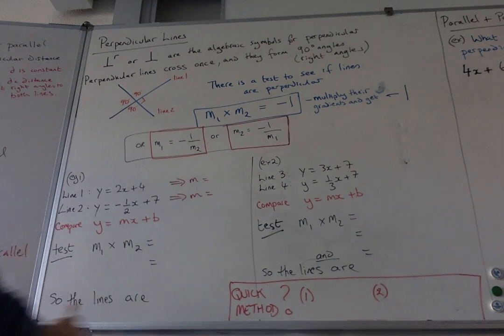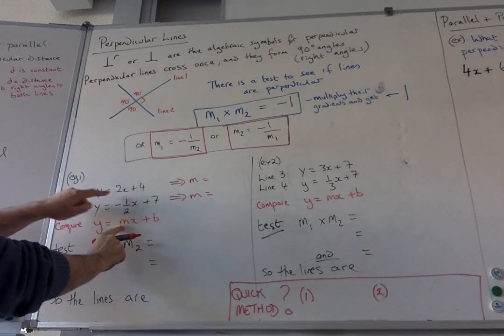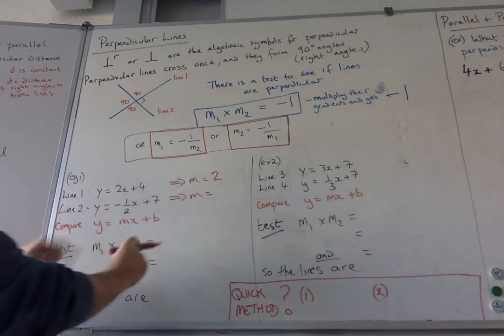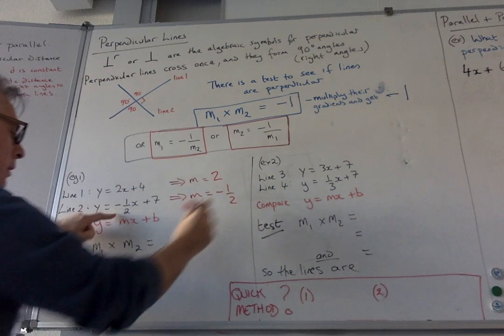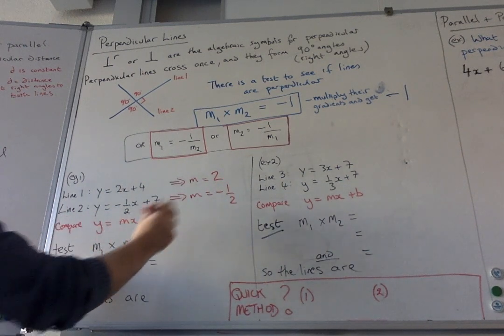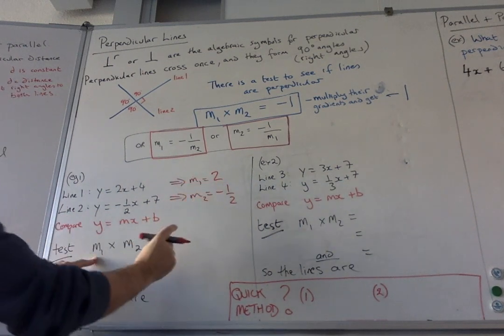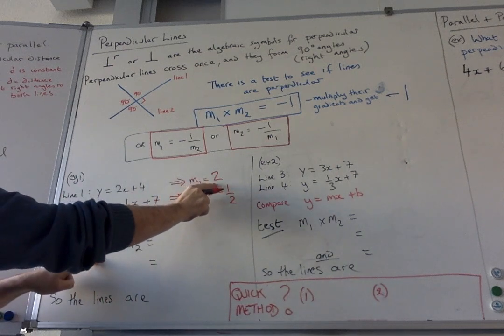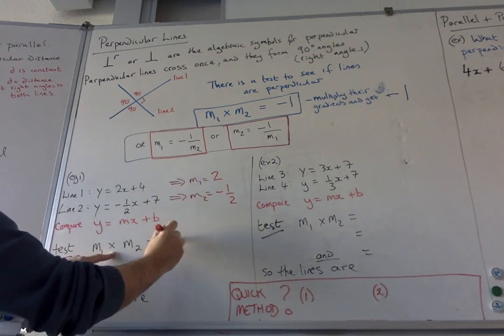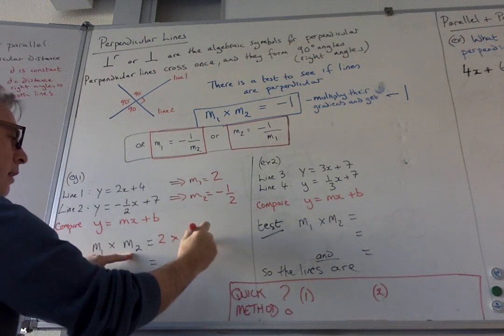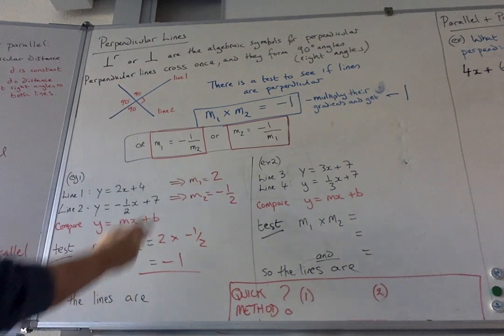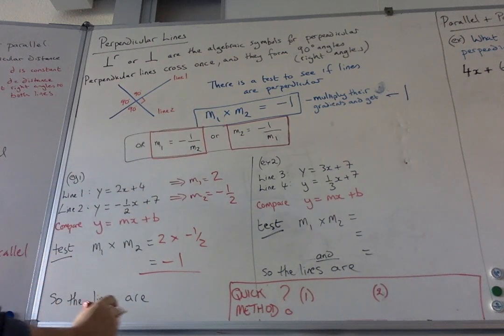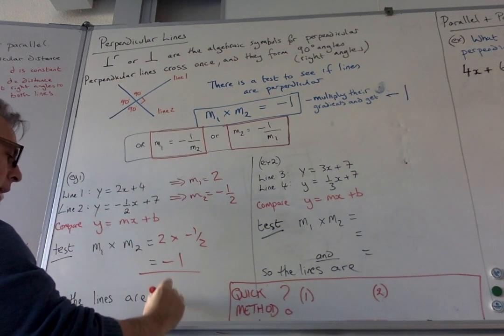Okay, so you're back. So on this one, you should have seen that m was 2. Here we're comparing again, m is minus a half. If I start this calculation, we have m1 and m2 with line 1, line 2. m1 is 2 times m2 is minus a half. Positive negative, negative. 2 times a half, minus 1. So this has worked. So this means the lines are perpendicular.